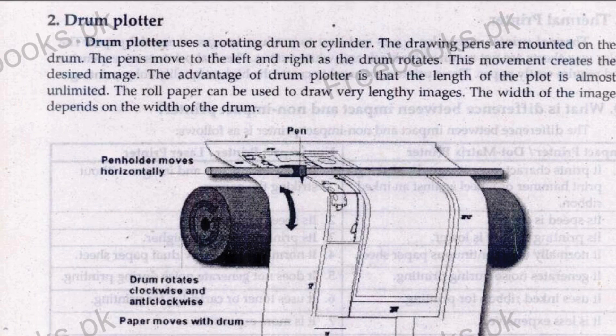The drum plotter uses a rotating drum or cylinder. The drawing pens are mounted on the drum. The drum and the paper are moved — the pen moves to the left and right as the drum rotates. The pen moves left or right while the drum moves in its direction. This movement of the drum and the pen together creates the desired image.